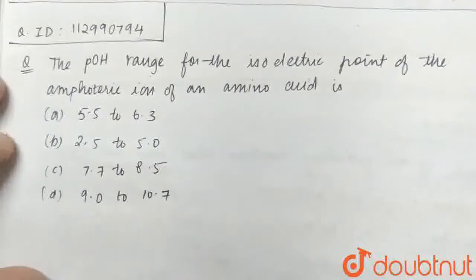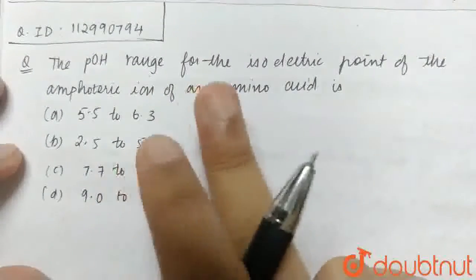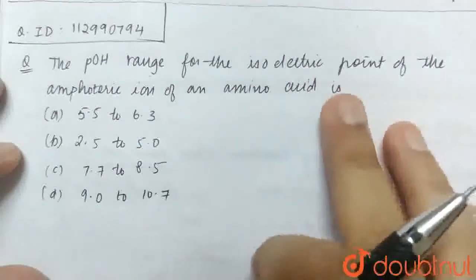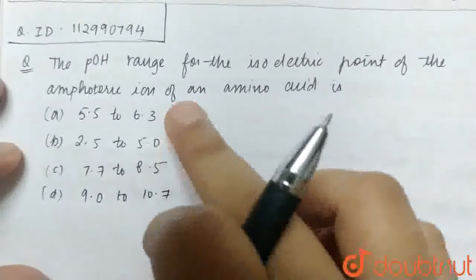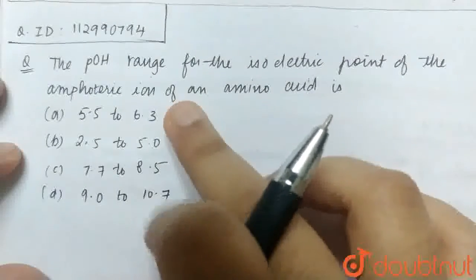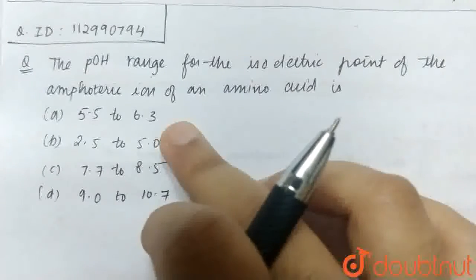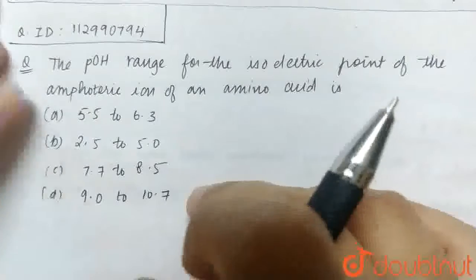Hi guys, welcome to Doubtnut. The question asked is: the pH range for the isoelectric point of the amphoteric ion of an amino acid is: Option A, 5.5 to 6.3. Option B, 2.5 to 5.0. Option C, 7.7 to 8.5. And Option D, 9.0 to 10.7.